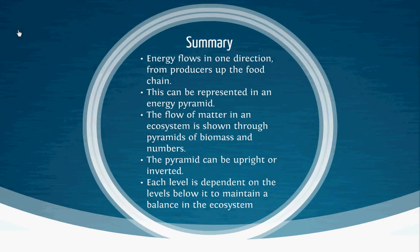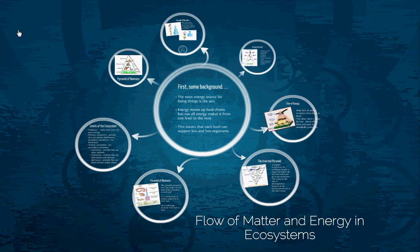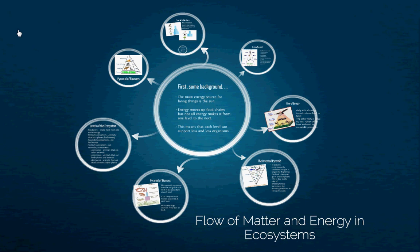In summary, energy flows in one direction from producers up the food chain, which is why that energy pyramid has a triangular shape, representing 10% going from level to level. The flow of matter in an ecosystem is shown through a pyramid of biomass and a pyramid of numbers, which can be upright, inverted, or odd-shaped. Each level is dependent on the levels below it to maintain balance in the ecosystem — if you lose one level, the whole thing will fall apart. We will be doing activities in class to show how this works, but these are the basics for your notes. I will put the Prezi address in case you need to go back, and I will see you in class.